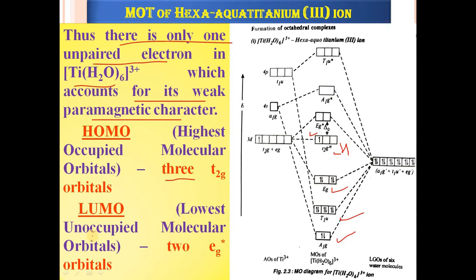The next level is LUMO — the Lowest Unoccupied Molecular Orbital — which is the 2EG* orbital. In MSc entrance exams, questions such as 'Which orbital is the HOMO or LUMO in [Ti(H₂O)₆]³⁺?' may be asked. The answer is: HOMO is T2G and LUMO is EG*.